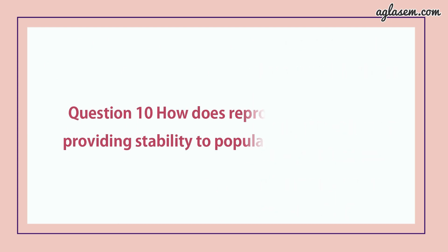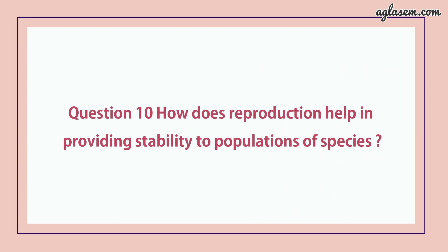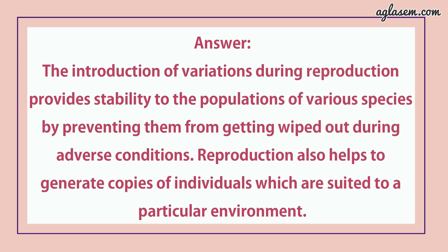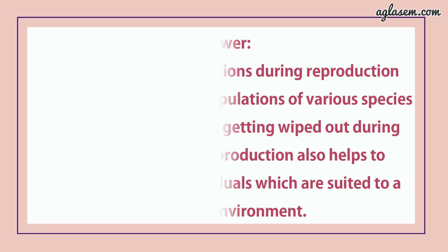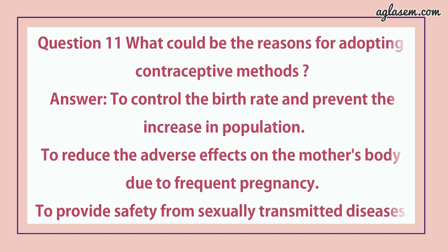Question number 10 says: how does reproduction help in providing stability to the population of species? Answer: the introduction of variations during reproduction provides stability to the population of various species by preventing them from getting wiped out during adverse conditions. Reproduction also helps to generate copies of individuals suited to a particular environment. Question number 11 says: what could be the reasons for adopting contraceptive methods? Answer: first, to control the birth rate and prevent the increase in population. Second, to reduce the adverse effect on the mother's body due to frequent pregnancy. Third, to provide safety from sexually transmitted diseases.